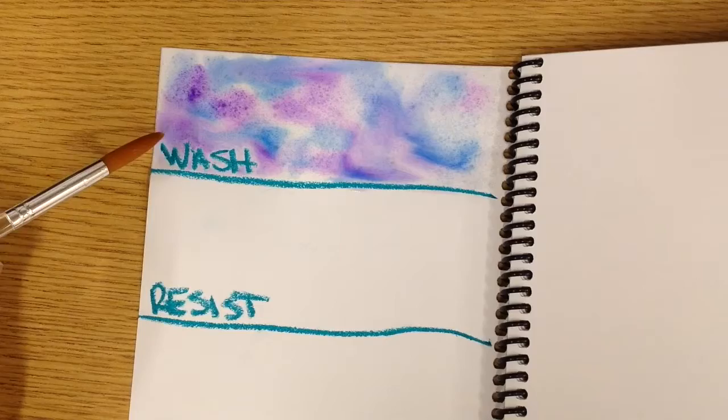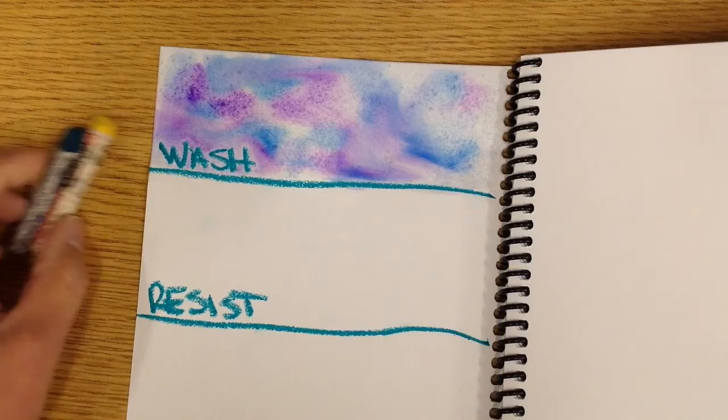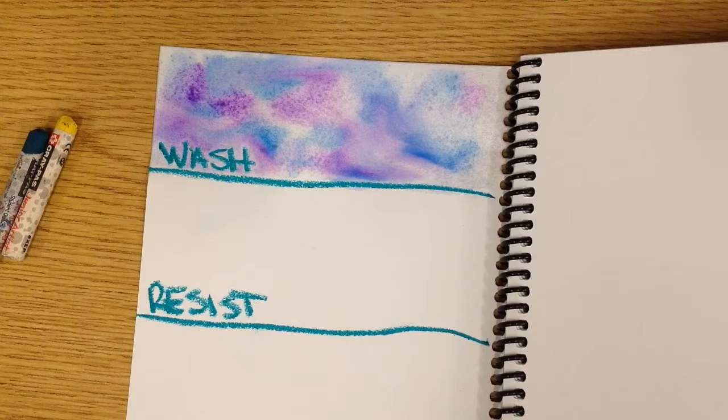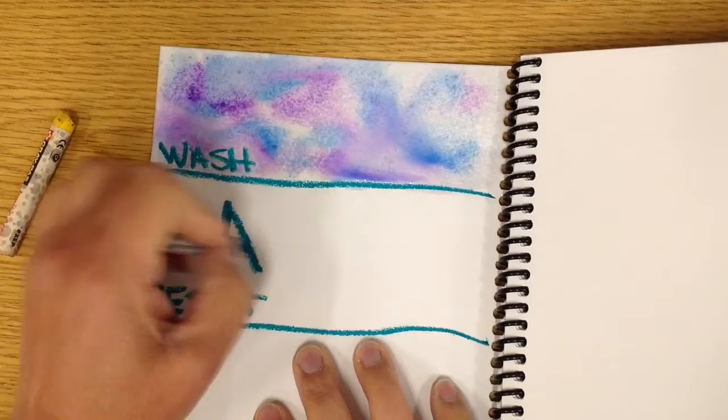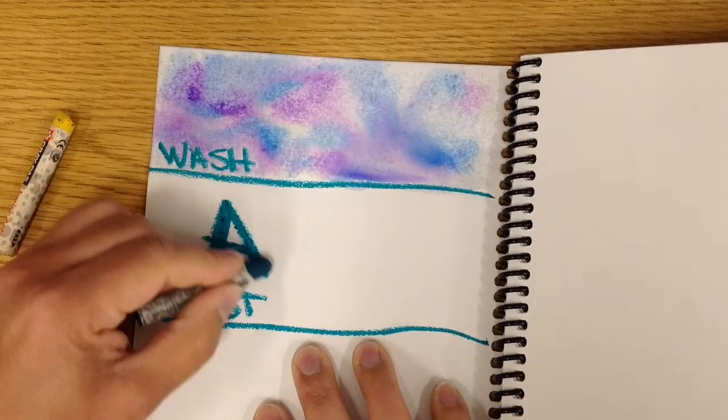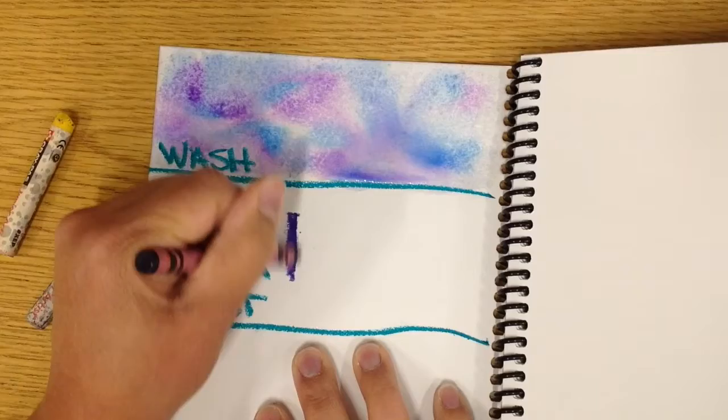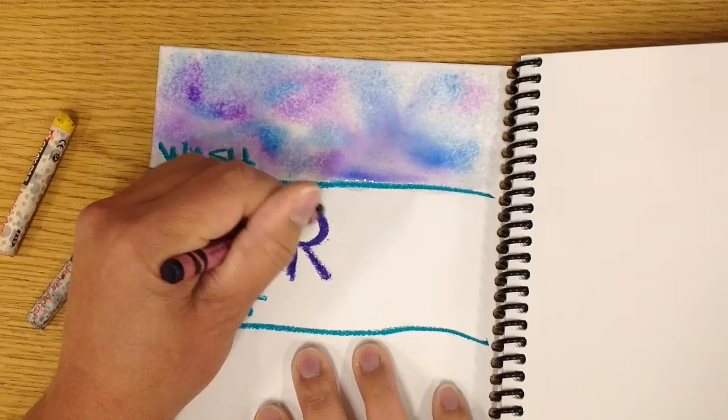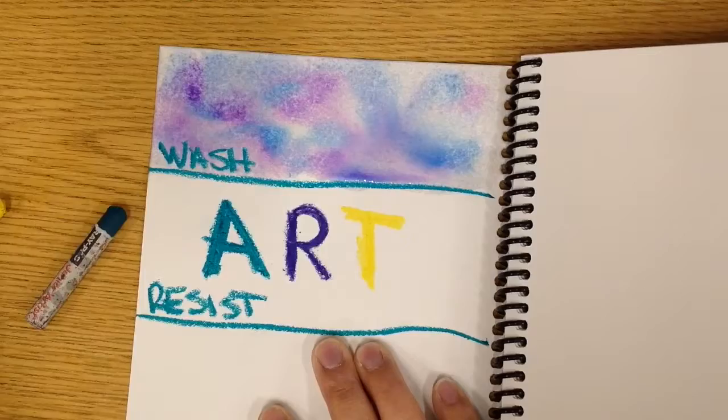The resist - again, you can do this with crayon or oil pastel. If you don't have those handy, you're going to want to skip this part unless somebody else has a magical way to do this. So with my oil pastels I'm just going to spell the word ART, keeping it simple here. You can do your name, you can do whatever you'd like. I want to press kind of hard with my oil pastel. I also want to show you what it looks like with a crayon.